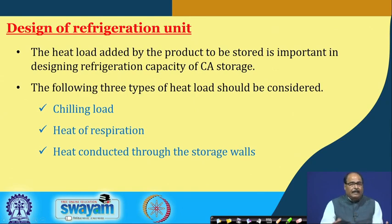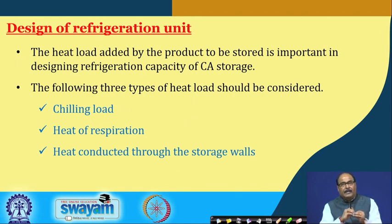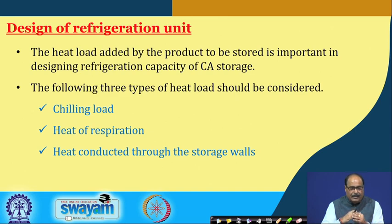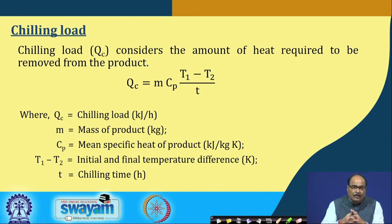Now let us discuss one by one the various aspects like heating system, CO2 generating system, O2 generating system — what are the various factors included in their design and load calculation. First, the design of a refrigeration unit: the heat load added by the product to the storage is an important consideration for calculating the refrigeration capacity of the control atmosphere storage system. There are three types of heat load which should be considered: number one, chilling load; then heat of respiration; and heat conducted through the storage wall.